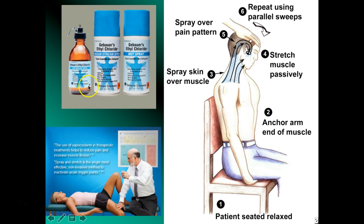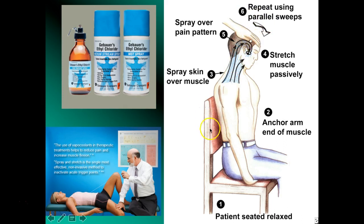Here's what the vapor coolant spray looks like now, shown being used on someone's upper trapezius. The technique starts with the patient sitting relaxed; you anchor their arm into the muscle, spray the skin over the muscle from about the shoulder all the way up to the auricle of the ear, spraying over the pain pattern. Then you passively stretch the muscle, spray over it again, and repeat using parallel sweeps. The spray is very cold and helps decrease muscle spasm in that area. There's also a demonstration of it being used on someone's hip flexor muscle.